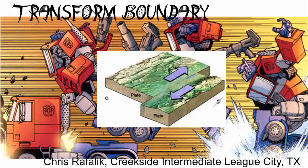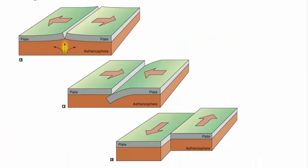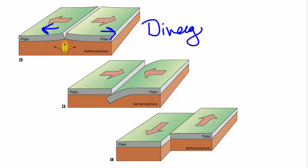Let's talk about transform boundaries. You can see here the direction of movement that we're going to have with the transform boundaries — plates sliding by one another. So let's just review before we get into that. When we have plates that are moving apart from one another, they are dividing, so these are divergent boundaries.